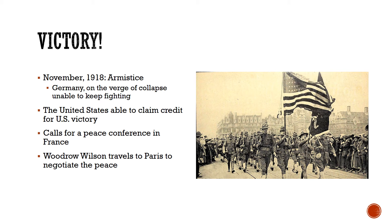Largely as the result of US involvement, the Entente powers — Britain, France, and the United States — win the war in 1918. An armistice is declared, essentially a ceasefire. Germany is unable to keep fighting because they can't keep up with the combined resources of Britain, France, and the United States, and so they ask for peace. The United States can basically take credit for this — if it wasn't for the US, there was a good chance Germany would have won, but when the United States entered, it was pretty much a sure thing that the Entente powers would prevail.